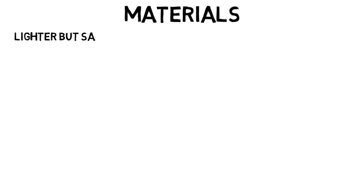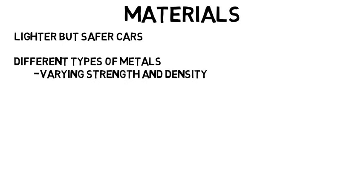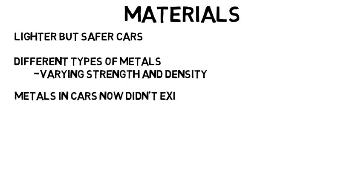There's research going on into materials that aim to make lighter but safer cars, which may involve looking at different types of metals with varying strength and density. A lot of the metals in cars today did not exist just 15 years ago, and we are still continuing to make advancements in this area.